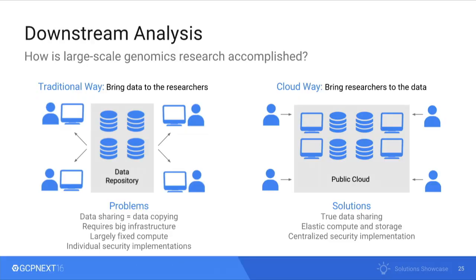Now with our factory in the cloud and storage under control, we want to enable downstream analysis. The traditional way is to bring the data to the researchers — download a petabyte of data to your local institute. This is terrible: data sharing is the same as data copying; it requires big infrastructure, shuts out people with great ideas who lack that infrastructure, and security implementations at each site are inconsistent. The cloud way is to bring the researchers to the data — elastic compute around the data, true data sharing, and centralized security implementation.